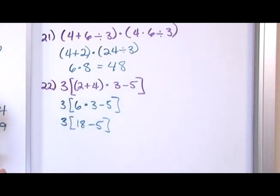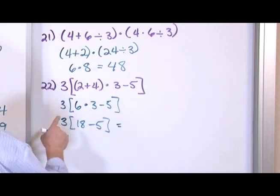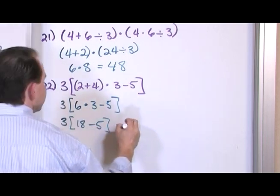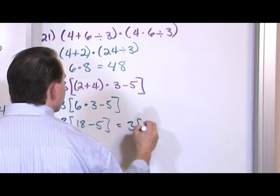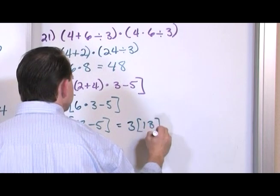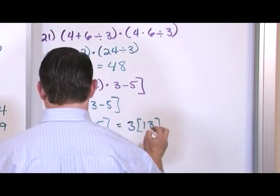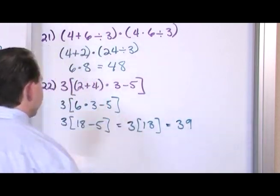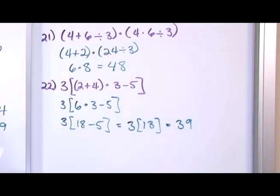Got to do that subtraction next. All right, so now that I have this guy, what I have is 18 minus 5, because I have to work in here. 18 minus 5 is 13. 3 times 13 is 39, and that's the answer, 39. So we just work inside to outside.